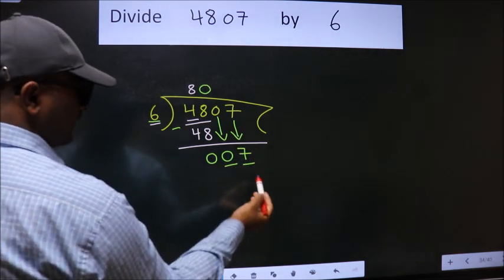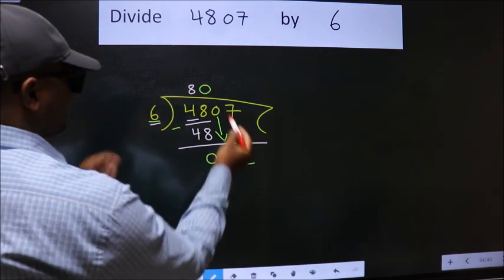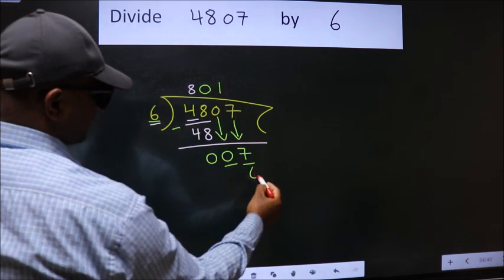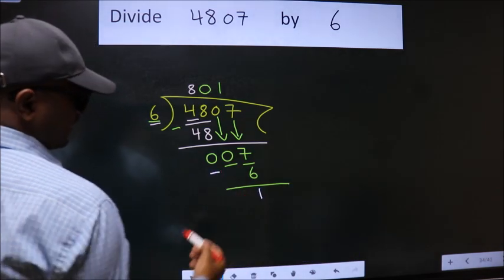So, 7. A number close to 7 in 6 table is 6 once 6. Now we subtract. We get 1.